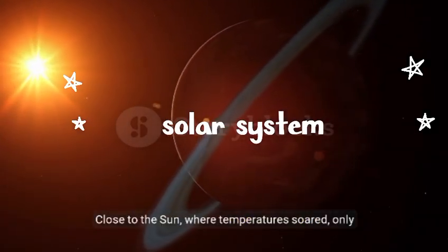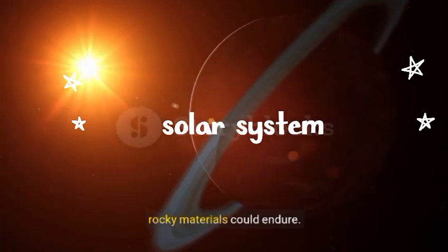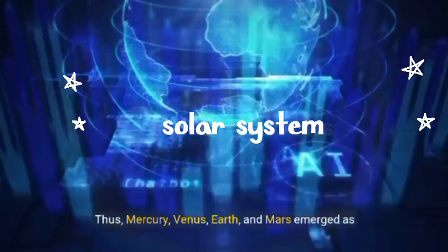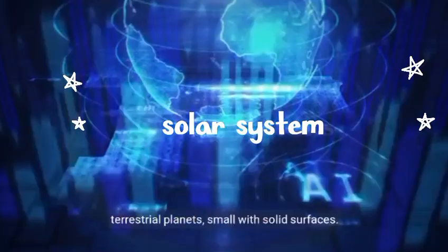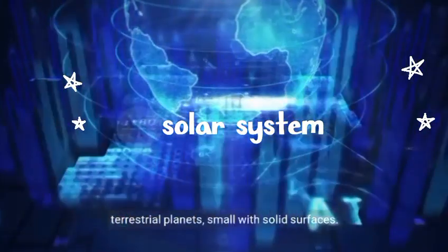Close to the sun, where temperatures soared, only rocky materials could endure. Thus, Mercury, Venus, Earth, and Mars emerged as terrestrial planets, small with solid surfaces.